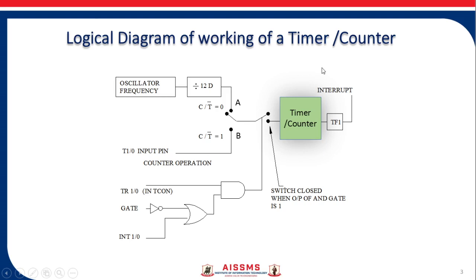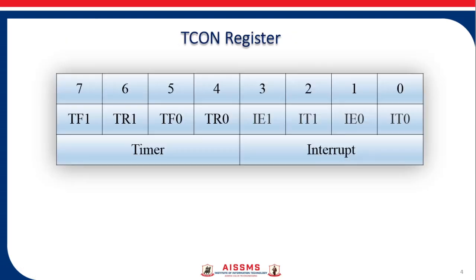Now we'll look at the two special function registers associated with timers. In the TCON register there are four bits related to timers, which are the most significant four bits. Bit 7 is TF1, the Timer 1 Overflow Flag, set to 1 when Timer 1 overflows. Bit 6 is TR1, the Timer Run Control bit — set to 1 to start the timer, 0 to stop it. Similarly, bits 4 and 5 are TF0 and TR0 for Timer 0. The least significant four bits relate to external interrupts and are out of scope for this video.